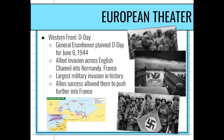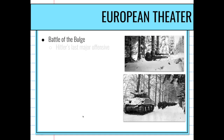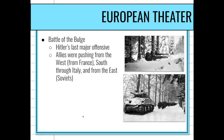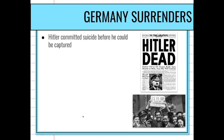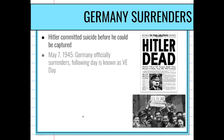The Battle of the Bulge was Hitler's last major offensive. The Allies were moving from the west, south, and east — from France, Italy, and the Soviet Union — closing in on Germany. Germany was surrounded. Hitler sees the writing on the wall and commits suicide in early May before he can be captured.